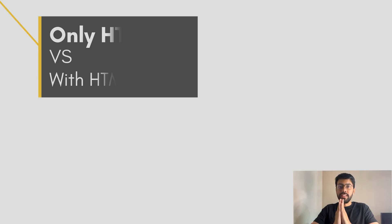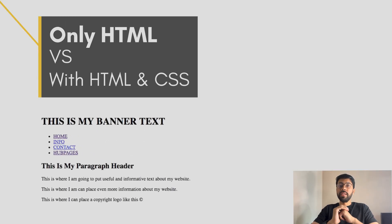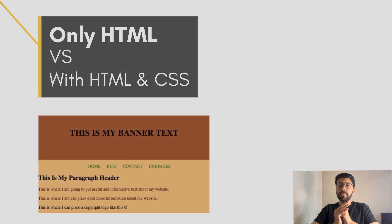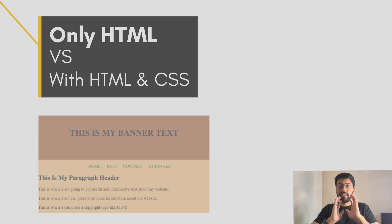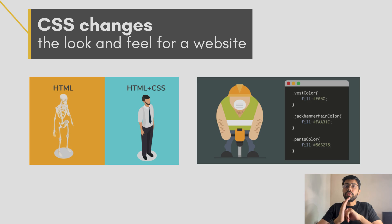Now let's move on to CSS. In simple words, once you have your HTML structure ready on your website or webpage, you add styling using CSS. You can write styles for anything you've used in HTML — images, text, transitions, and animations. Once you start CSS, you will love how it can change the look and feel of a website.